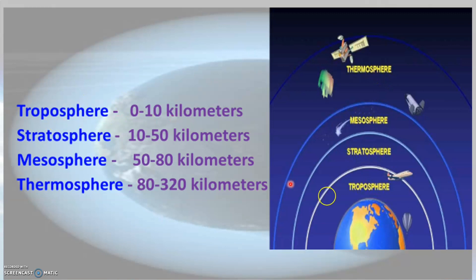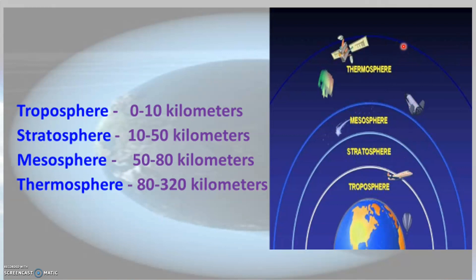Troposphere is at a distance of 0 to 10 kilometers above the surface of the earth. Stratosphere is at a distance of 10 to 50 kilometers. Mesosphere is just above the stratosphere, at a distance of 50 to 80 kilometers. Thermosphere extends from 80 to 320 kilometers above the surface of the earth.